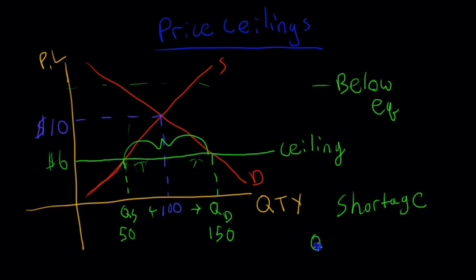So we have quantity demanded minus quantity supplied equals the shortage. So we see here that we have 150 minus 50 equals 100. We have a shortage of 100 units of this good. And those are price controls, and I'll see you in the next video.